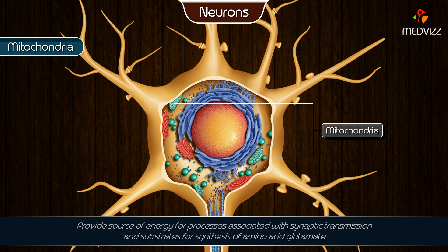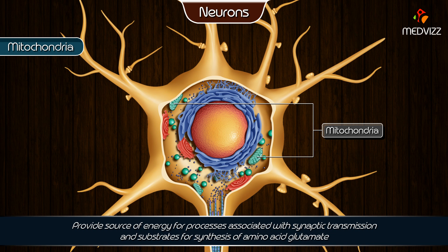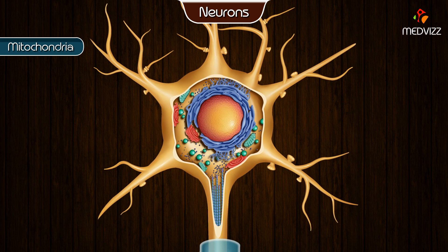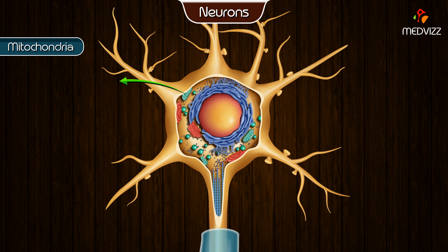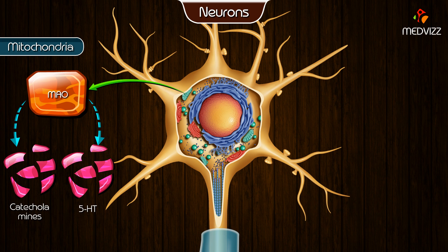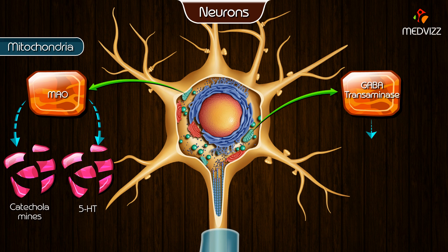Mitochondria provide both a source of energy for processes associated with synaptic transmission and substrates for the synthesis of certain neurotransmitter chemicals such as amino acid glutamate. In addition, mitochondria contain enzymes for degrading neurotransmitter molecules, such as MAO which degrades catecholamines and 5-hydroxytryptophan, and GABA-transaminase which degrades GABA.